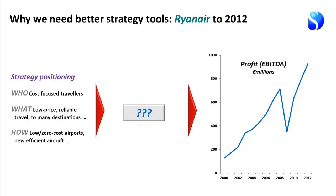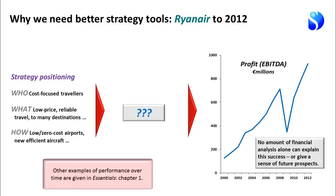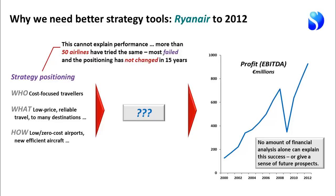A common way of thinking about strategy is the positioning a business chooses. Ryanair chooses to serve primarily cost-focused travelers with low price, reliable travel to very large numbers of destinations, using low or zero cost airports and new efficient aircraft. The problem is what happens between that statement of strategic positioning and the profit growth that actually emerges. No amount of financial analysis alone can explain this success or give a sense of future prospects. We know positioning can't explain performance because more than 50 other airlines have tried the same thing in the same market, most have failed, and Ryanair's own positioning has not changed in 15 years.